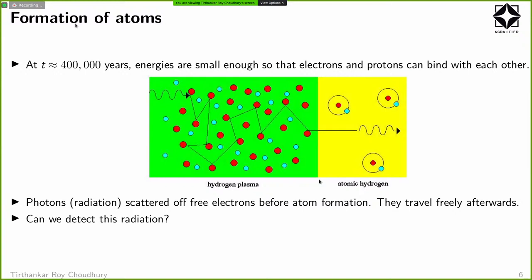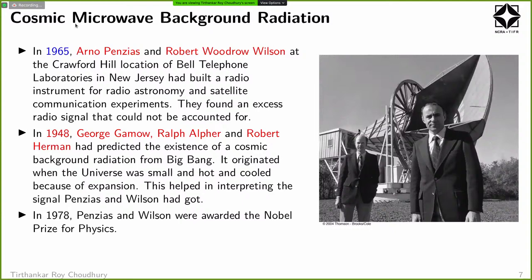If this is what the model predicts, one can ask: can we detect this radiation? If it is free-streaming, it should be everywhere and we should be able to detect it. It turns out this radiation is nothing but the Cosmic Microwave Background — the CMB. The discovery of the CMB has a nice history with a radio astronomy connection, which is why we are talking about it.